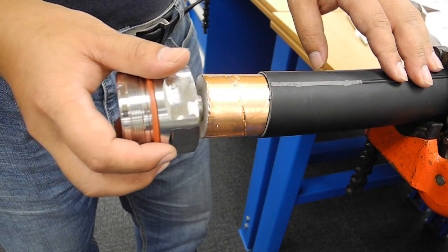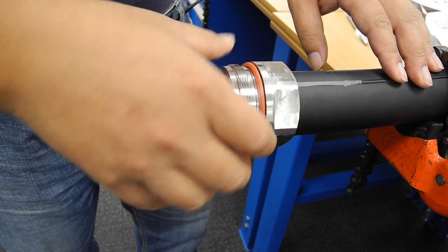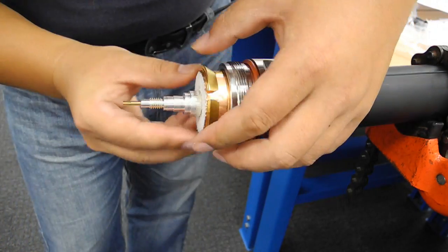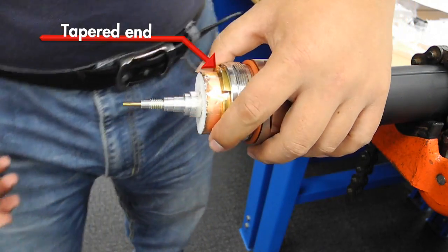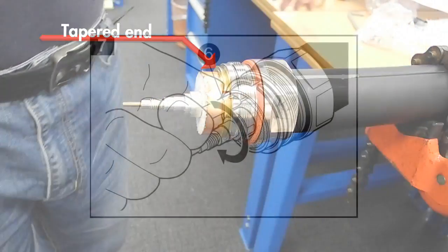Slide the clamping nut over the jacket so that the threads face the cable end. Place the clamp ring over the foil. Make sure the tapered end is toward the clamping nut.